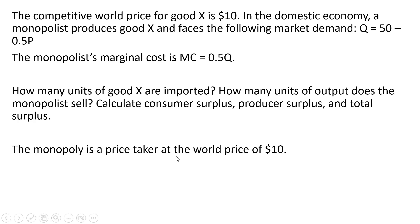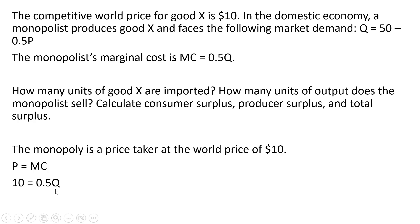In this case, a monopoly is going to be a price taker at the world price of $10. We're going to set the world price equal to the monopolist marginal cost: $10 equals 0.5Q. Solving for Q, the monopolist will produce and sell 20 units.